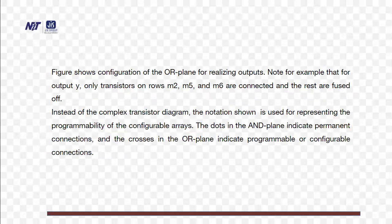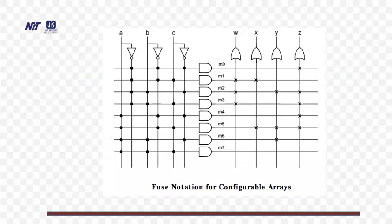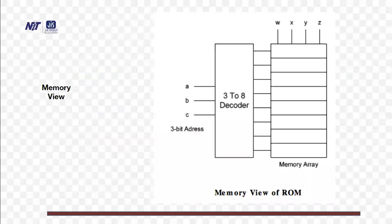For realization of a certain function on an output, transistors corresponding to the used min terms are kept and the rest are blown to eliminate their contribution to the output function. The figure shows the OR plane for realizing output Y — only transistors of rows M2, M5, and M6 are connected and the rest are fused off. The dots in the AND plane indicate permanent connections and the crosses in the OR plane indicate programmable or configurable connections. Memory view: it is essentially a decoder — ABC at the decoder input (three-input decoder) and WXYZ at the output, representing the memory part and the decoded part. This is how memory can be generated using this conception.